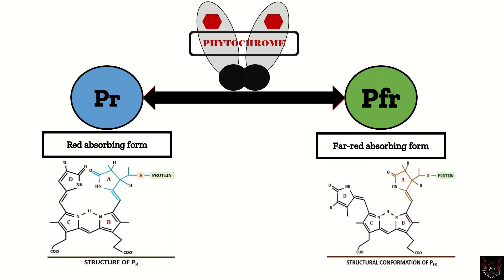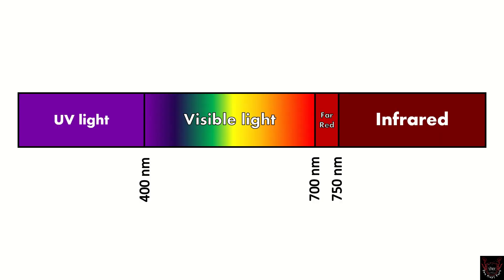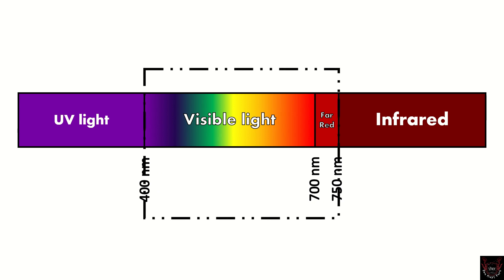First we will clear the concept of red light and far red light. Here is a part of a spectrum showing UV, visible, far red, and infrared — but we are only concerned with red light of the visible spectrum and far red light. Red light is of 660 nanometers and far red is of 730 nanometers. Remember these two wavelengths.